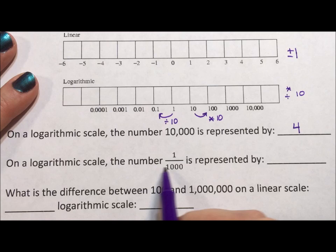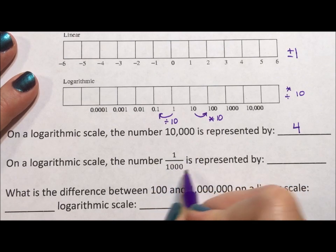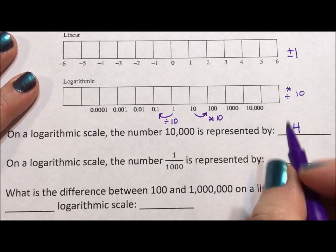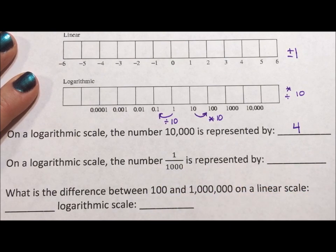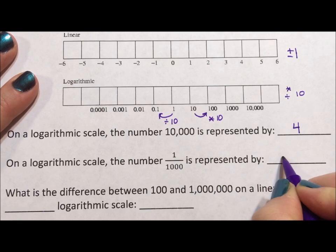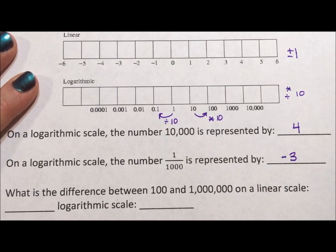On a logarithmic scale, the number 1 over 1,000 is represented by negative 3. This is negative for the denominator because negative exponents means dividing, but there's still three zeros, so it's negative 3.